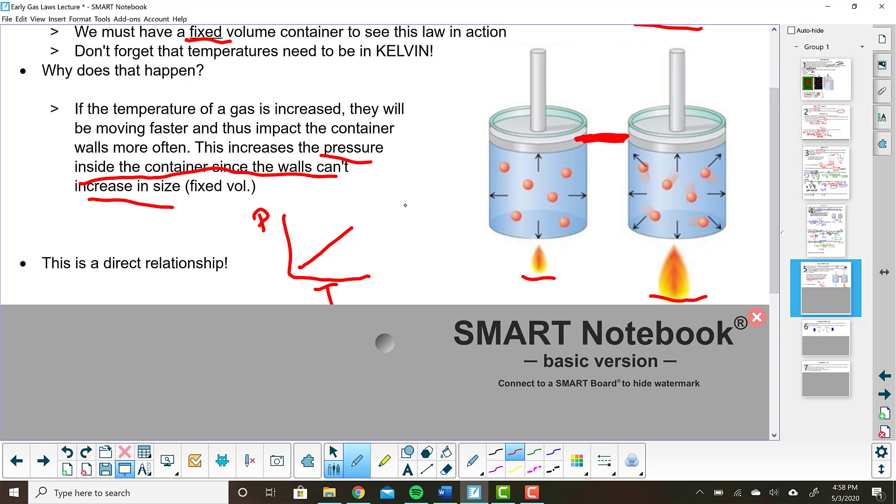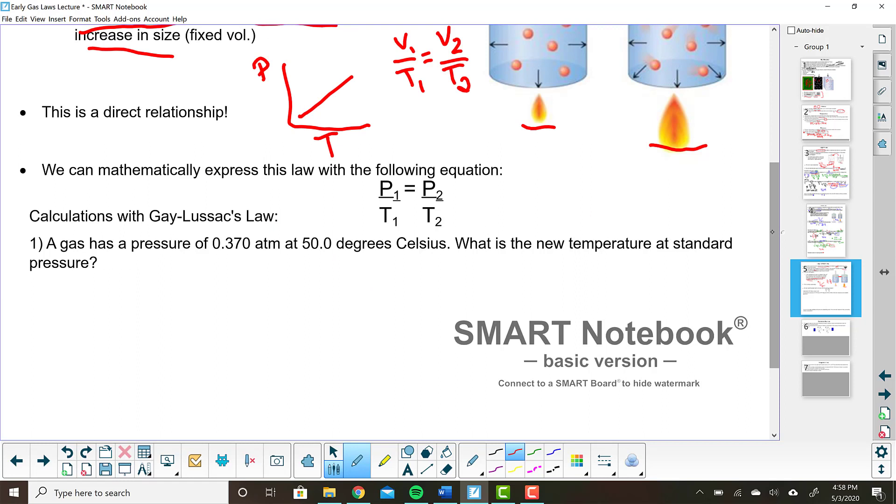Now if you're thinking on your feet, Charles's law was V1 over T1 equals V2 over T2. Any guesses on what this Gay-Lussac's law equation is? Hopefully this P1 over T1 equals P2 over T2 because this is going to very similarly show that direct relationship, just like Charles's law that we talked about in the last video.